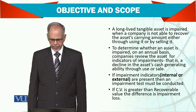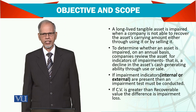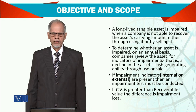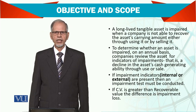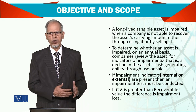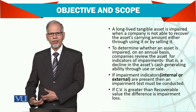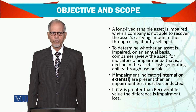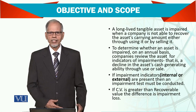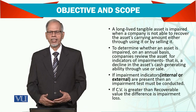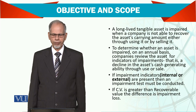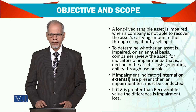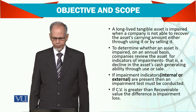Impairment indicators can be internal or external. Internal indicators include: the asset depreciating through normal use, becoming obsolete, or the asset not fulfilling the purpose for which it was bought. External indicators include legal restrictions or changes in technology, meaning the asset may no longer be as important or may not be generating enough revenue for the company. These are a few key factors; if those factors are present, then you can see that the assets are being impaired.